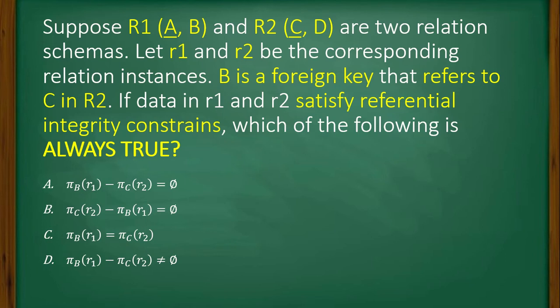Now let's check. Say R1's relation schema looks like this. It is a table having two columns A and B with two attributes. A is the primary key as it is underlined.